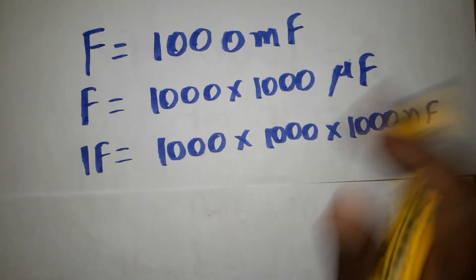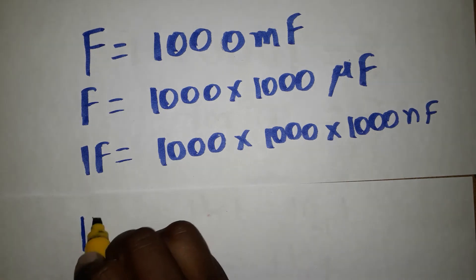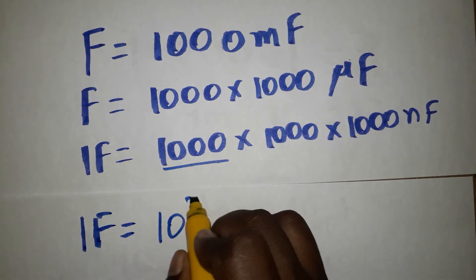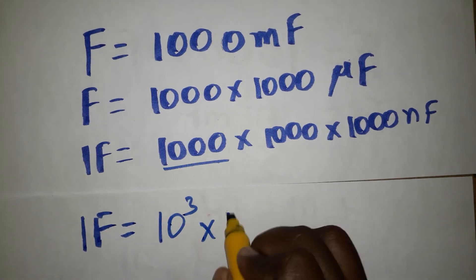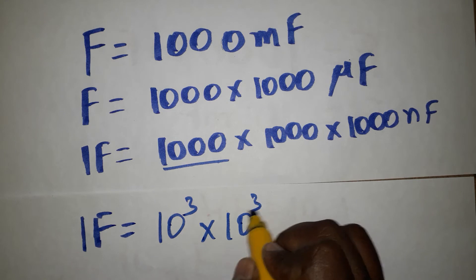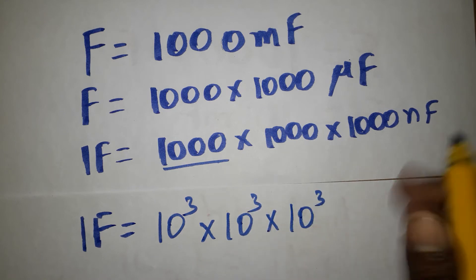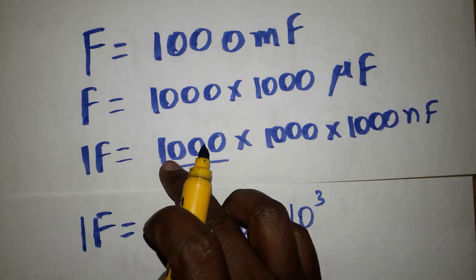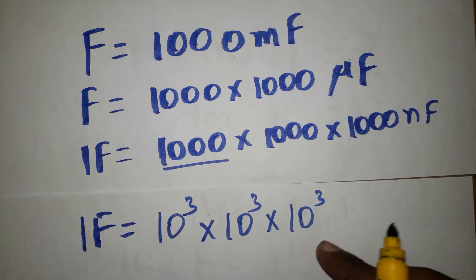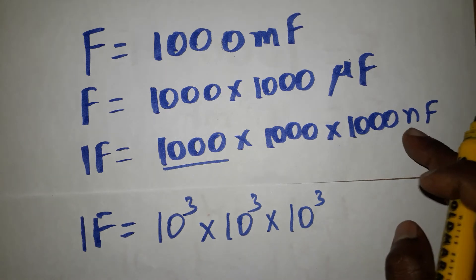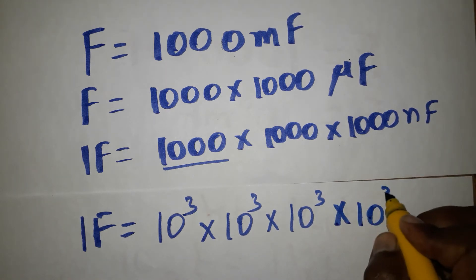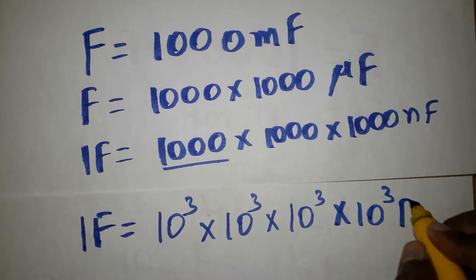The next unit is picofarad. Again you increase by 3 zeros. So 1 farad is equal to 10^3 into 10^3 into 10^3 into 10^3 picofarads. We can write 1000 as 10^3, and from nano to picofarad we add another 10^3.